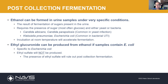In addition to production of ethanol, if E. coli is the bacteria that's present, E. coli is capable of taking that ethanol and converting it to ethylglucuronide, a metabolite of ethanol. Now, this is specific to E. coli. What's also important to note is that ethylsulfate — the other metabolite — will never ever be produced in a urine sample.